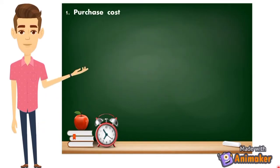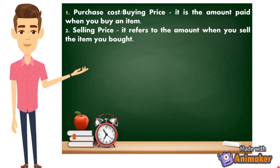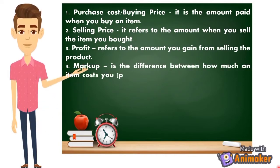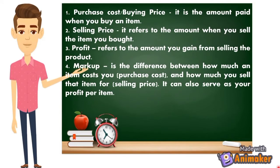Number one: purchase cost or buying price — it is the amount paid when you buy an item. Number two: selling price — it refers to the amount when you sell the item you bought. Number three: profit — refers to the amount gained from selling the product. Number four: markup — is the difference between how much an item cost you (purchase cost) and how much you sell that item for (selling price), and it can also serve as your profit per item.